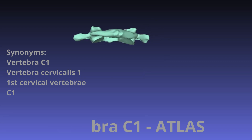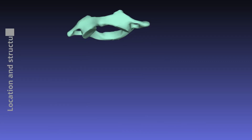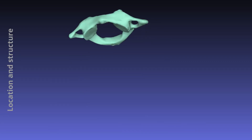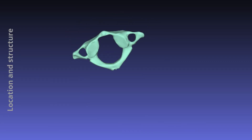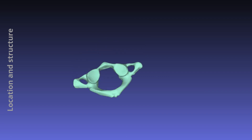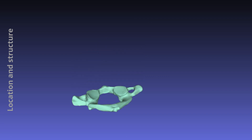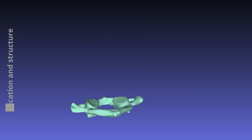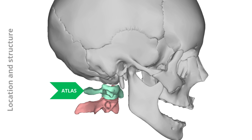Location and structure. Located in the uppermost portion of the cervical region of the spine, the atlas is the first vertebra of the spine. The atlas articulates superiorly with the occipital condyles, located on each side of the foramen magnum of the skull. It articulates inferiorly with the second cervical vertebra, C2, also called the axis.